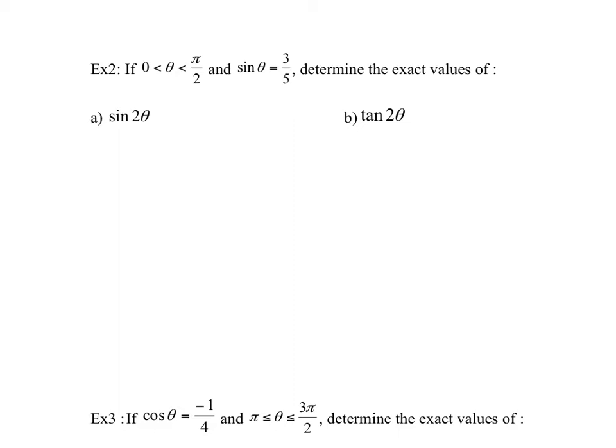If the angle is in the first quadrant — meaning between 0 and pi over 2 — and sine theta equals 3 fifths, determine the exact value of sine 2 theta. Well, from the formulas, sine 2 theta equals 2 sine theta cos theta. I already know sine theta. I still need to find cos theta, which goes back to what we learned in exercise 10.